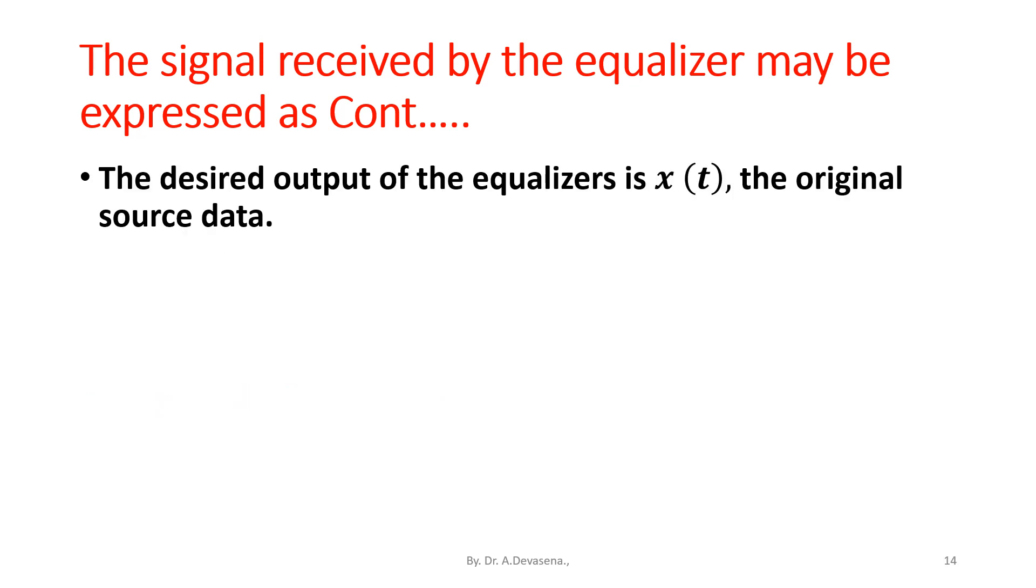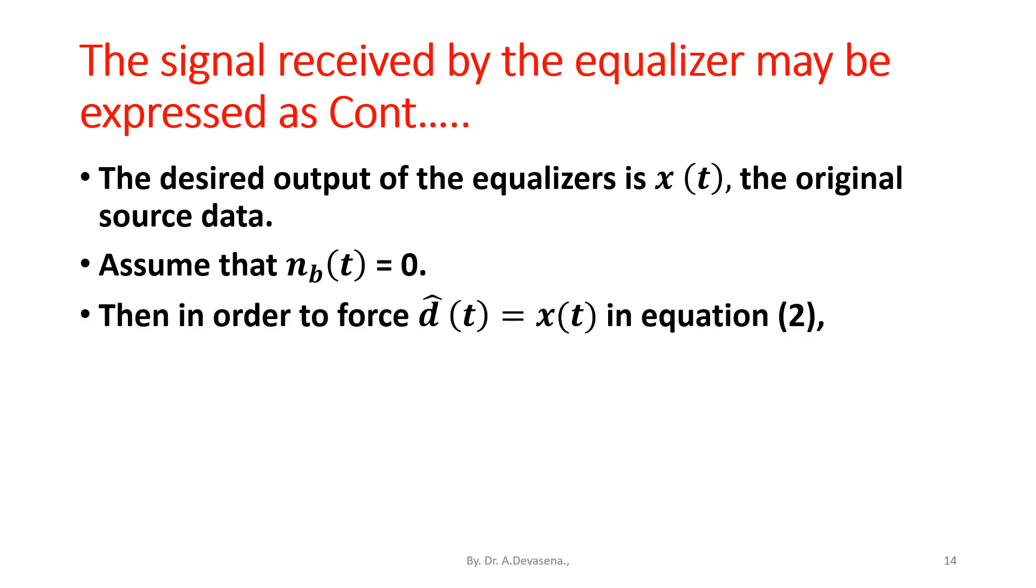The desired output of the equalizers is x(t), the original source data. Assume that n_b(t) = 0. Then, in order to force d(t) = x(t) in equation 2. Then, we get g(t) = f*(t) ⊗ h_eq(t) = δ(t). Consider this as equation 4.